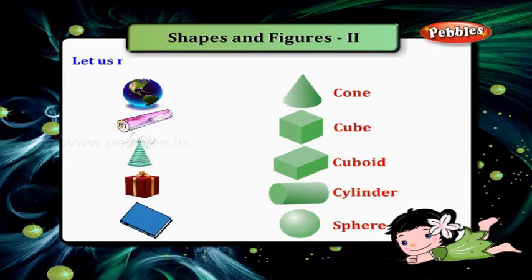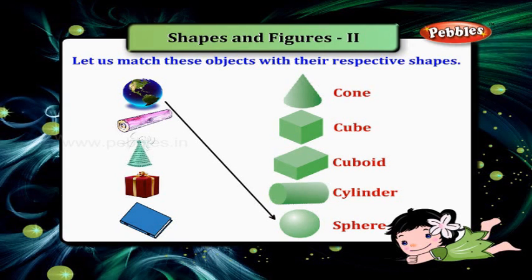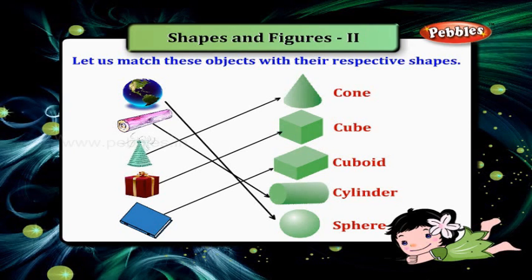Let us match these objects with their respective shapes. The model of the earth has the shape of a sphere. This wooden log is cylindrical in shape. This birthday cap has the shape of a cone. This box has the shape of a cuboid. This book has the shape of a cuboid.